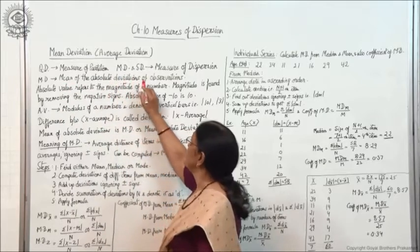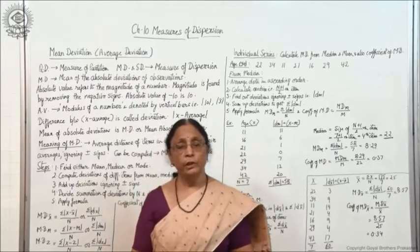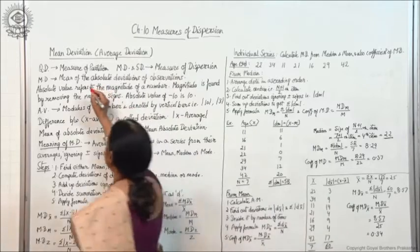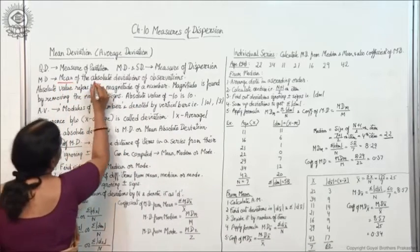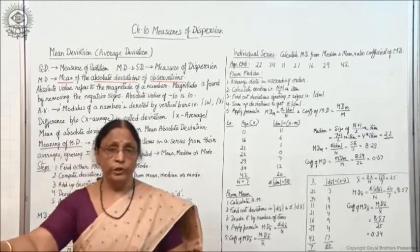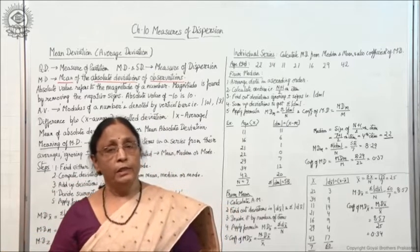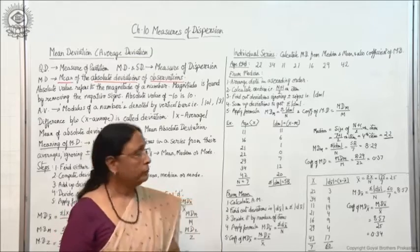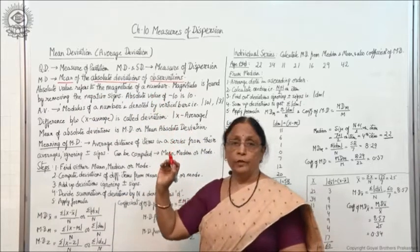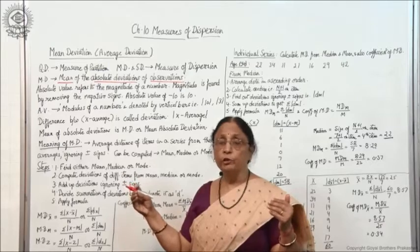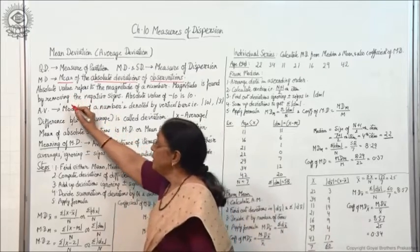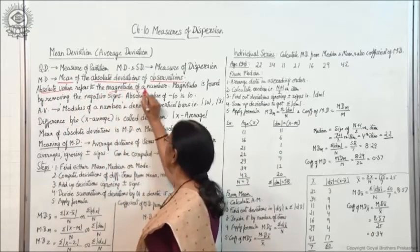Mean deviation is the mean of the absolute deviations of observations. The important point is 'mean of absolute deviations of observations.' Now, absolute value refers to the magnitude of a number — that is, the actual strength or size of a number, which is clear from its absolute value.